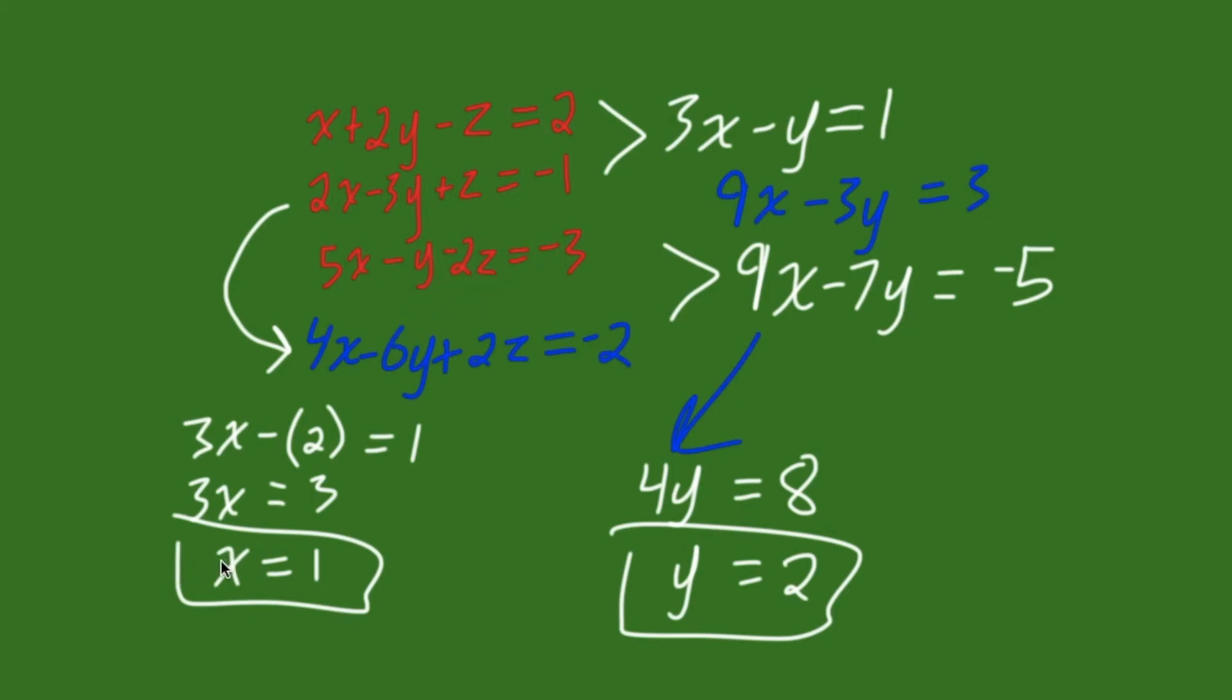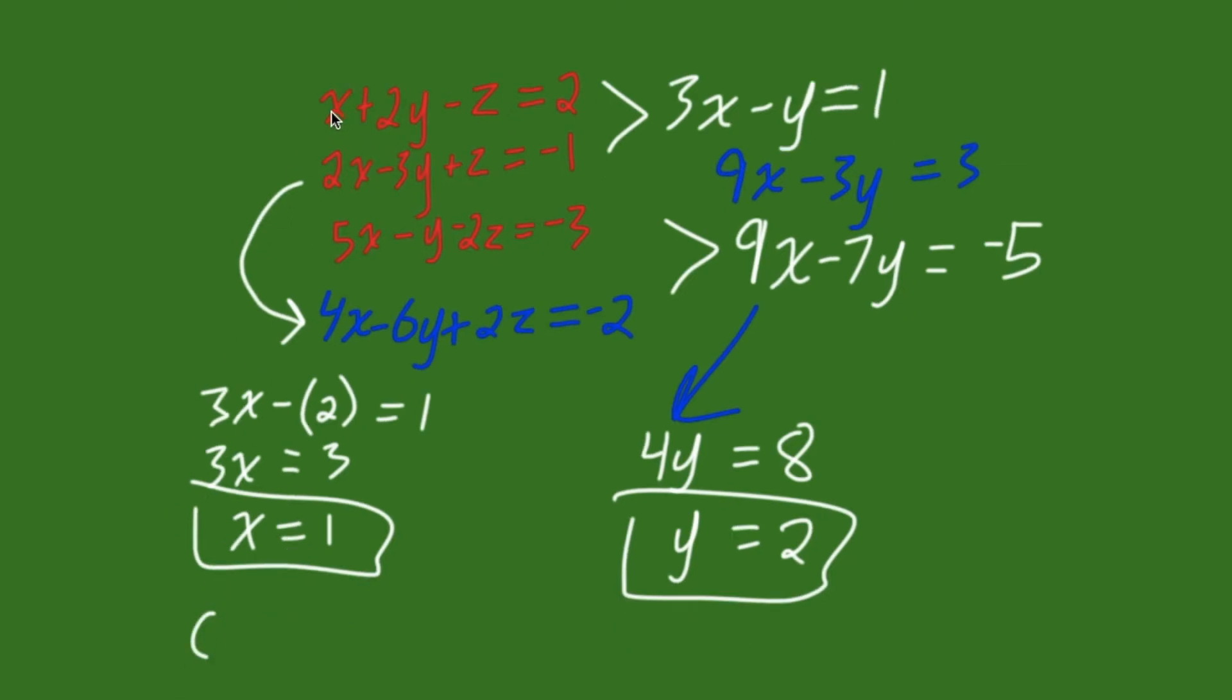Now, to find z, since we have x and y, we can substitute those values into any one of these three equations. And, just solve for z. As, it will be the only variable left. So, let's just choose the top equation.